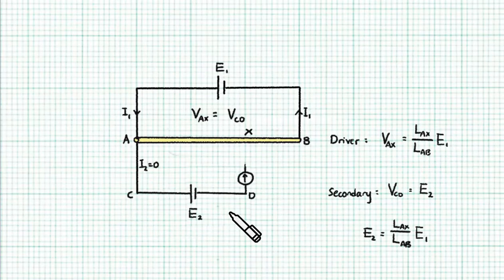For the secondary circuit, VCD is, of course, equals to E2. But we know that these are the null deflection points, so we know that VAX does match VCD. So VAX is equals to VCD. So E2 can be calculated as follows.